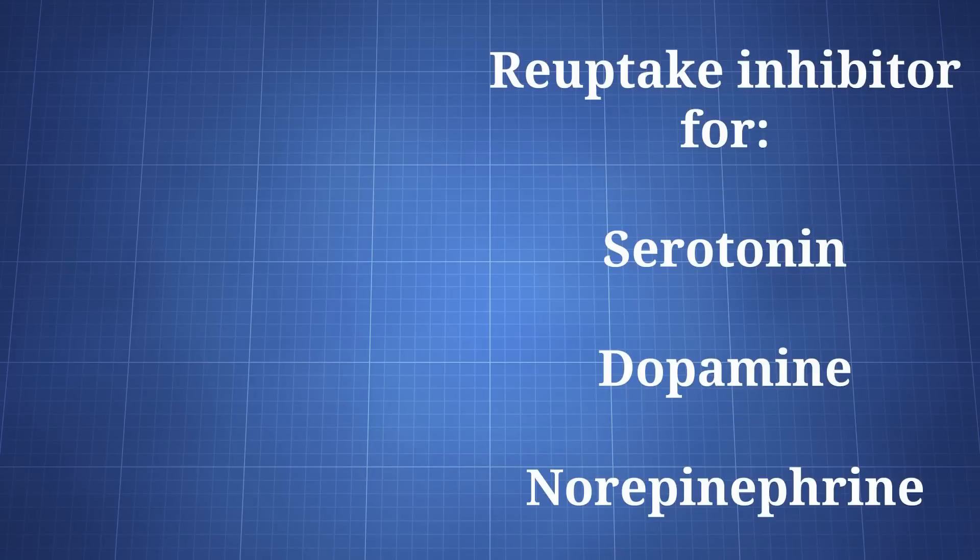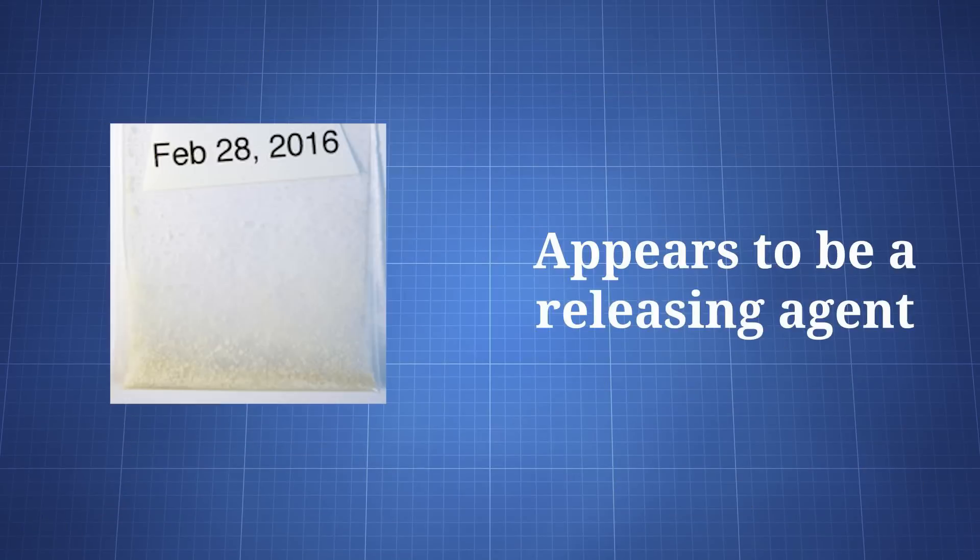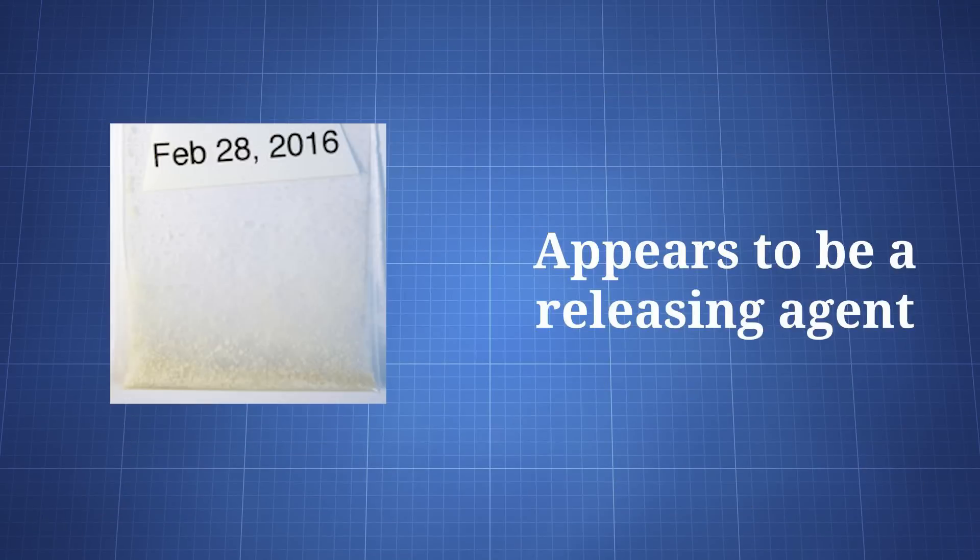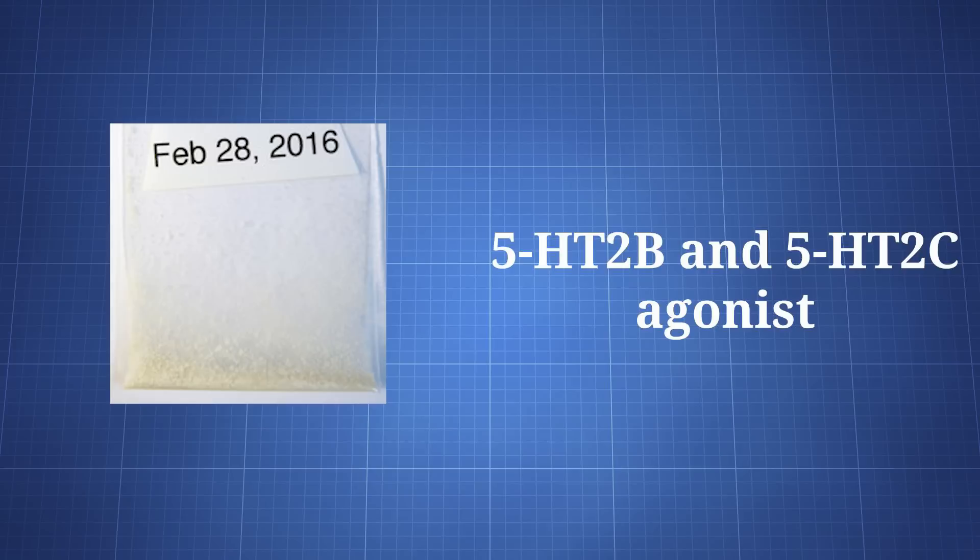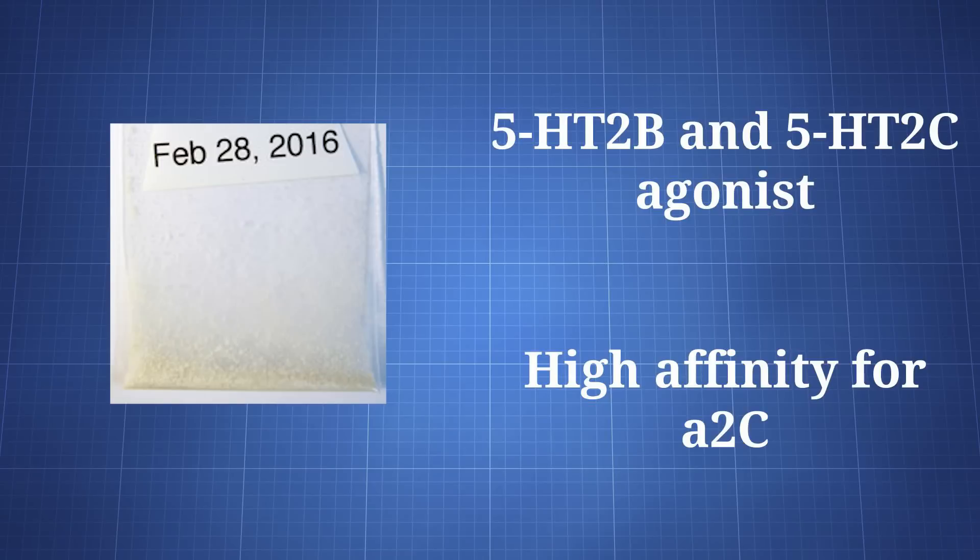It's a reuptake inhibitor for serotonin, dopamine, and norepinephrine. It also appears to be a releasing agent. 6-APB is an agonist for some serotonin receptors, primarily 5-HT2B and 5-HT2C. It also has a high affinity for the alpha-2C adrenergic receptor.